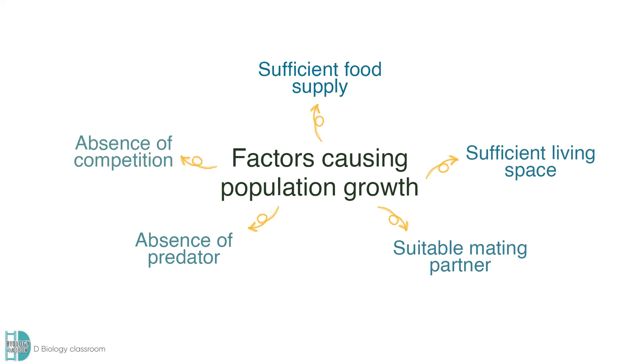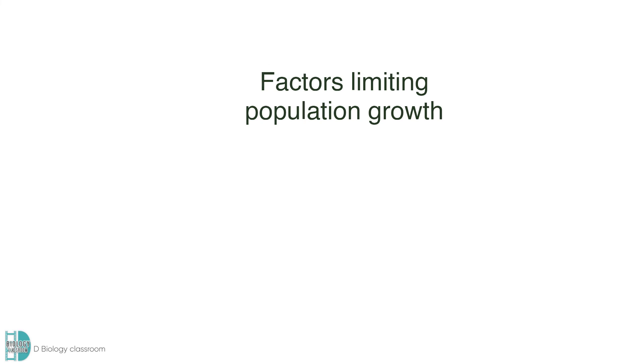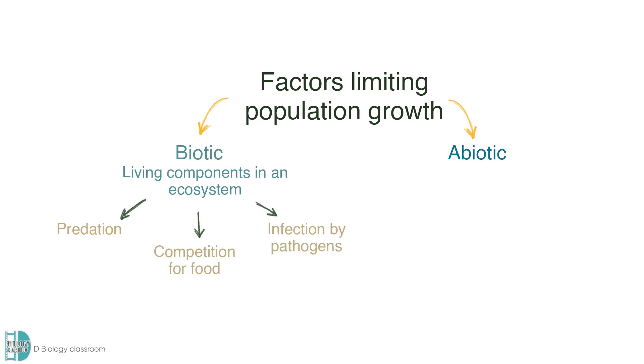However, there are some environmental factors which act against those factors I mentioned just now. They can control the population size. These factors can be biotic or abiotic. Biotic factors are made up of living components in an ecosystem. They are predation, competition for food, or infection by pathogens. The abiotic factors, on the other hand, are caused by the non-living components of the environment, such as water supply or nutrients level in the soil.